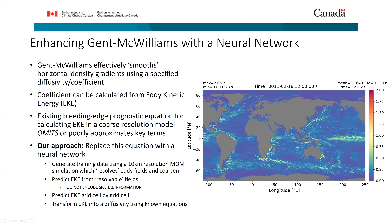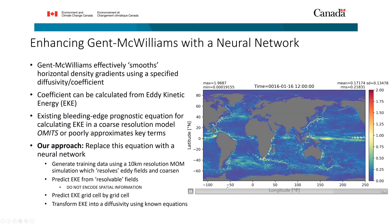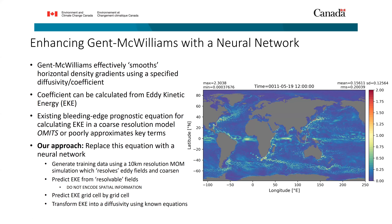Our approach was to replace the prognostic equation that estimates eddy kinetic energy with a neural network. We generated training data using a 10-kilometer resolution ocean model — enough to capture the larger scales of turbulence. You can see those eddy structures, especially off the east coast of the United States where the Gulf Stream generates rings. From that model we calculated both the eddy terms and the mean terms from the equation, then trained a machine learning model using Reynolds averaging to separate eddy scales from mean resolved flow scales.